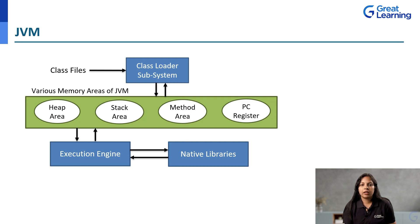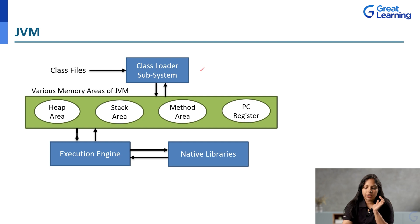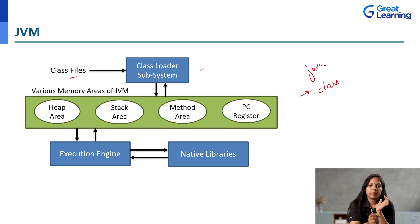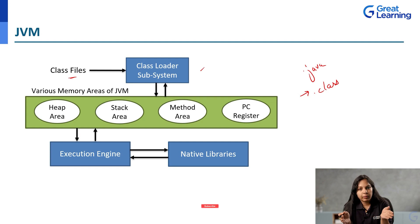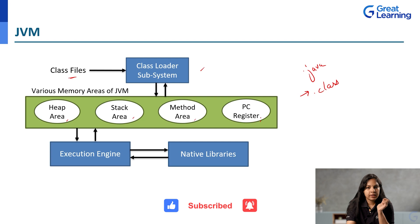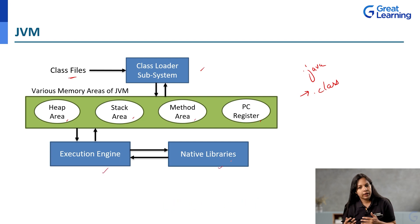You can see a diagram here. The first part is the class loader subsystem. You write a Java code with a .java extension. When you try to execute it, the .java file is converted to a .class file. This class file goes as input to the class loader subsystem. The class loader subsystem interacts with the different memory areas of JVM — heap area, stack area, method area, and PC registers — which then interact with the execution engine and native libraries to finally execute the .class file and give you the output.